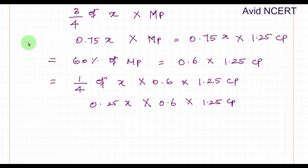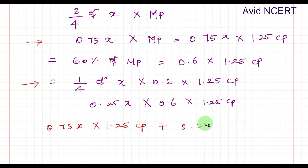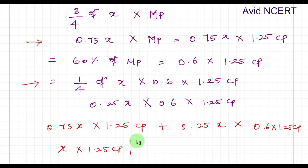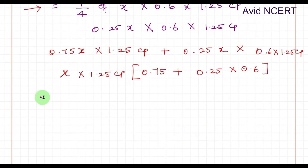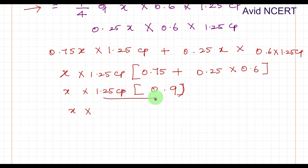The final total sales are found by adding the two portions: 0.75x × 1.25 CP + 0.25x × 0.6 × 1.25 CP. Taking x and 1.25 CP as common factors: x × 1.25 CP × (0.75 + 0.25 × 0.6) = x × 1.25 CP × (0.75 + 0.15) = x × 1.25 CP × 0.9 = 1.125x CP. This is the final sales value after applying the mark price and discount.